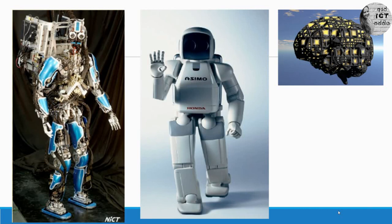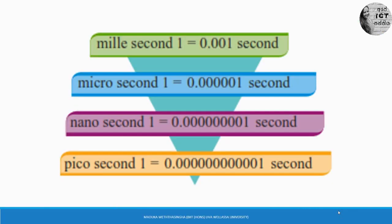The fifth generation is called artificial intelligence. Now, reviewing the execution speeds: first generation — millisecond; second generation — microsecond; third generation — nanosecond; fourth generation — picosecond.